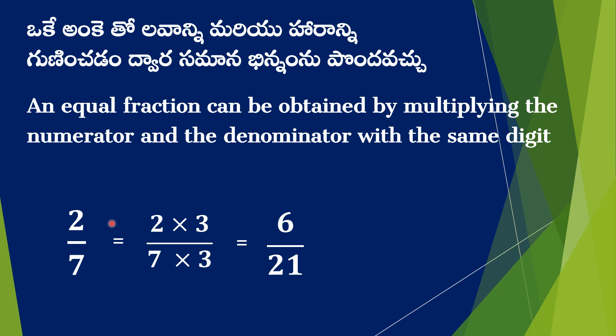Look at here, here we have 2 by 7. How to get equivalent fraction? Now we are multiplying same digit with numerator and denominator. We are multiplying with 3. 2 into 3, 6. 7 into 3, 21. So, 2 by 7 equal to 6 by 21. This is equivalent fraction.